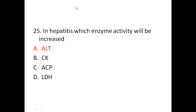Twenty-fifth question: in hepatitis, which enzyme activity will be increased? Options are ALT, CK, ACP, or LDH. The right answer is ALT, alanine aminotransferase. This enzyme is mainly found in the liver and converts protein into energy for liver cells. Higher levels of ALT indicate liver damage, which may be from hepatitis infections, cirrhosis of the liver, liver cancer, and other liver diseases. Thank you, we will be discussing the remaining answers in the next part.